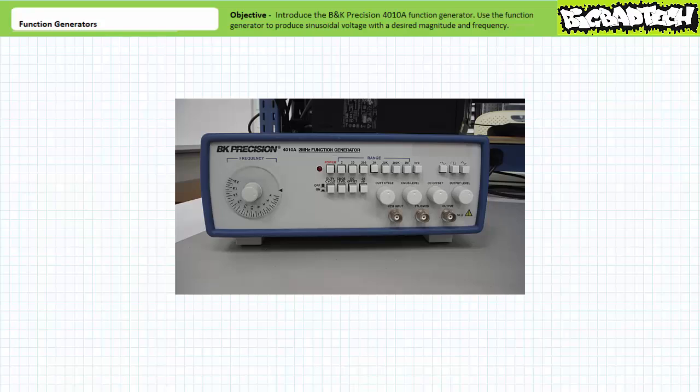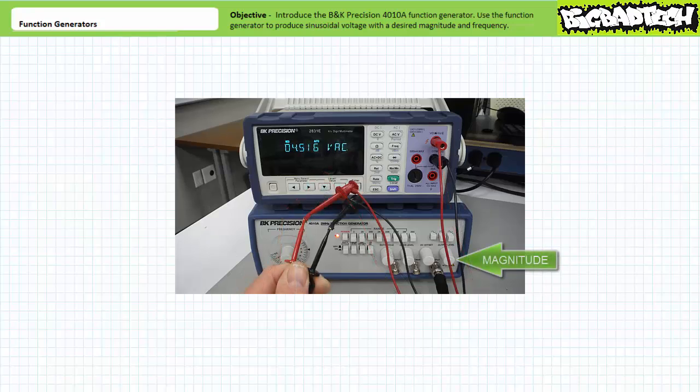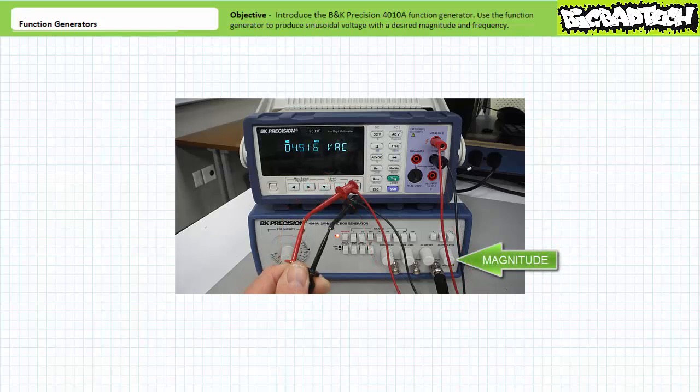Finally, one can obtain an output signal from the BK Precision 410A function generator using the output labeled output on the lower right-hand side. Let's plug in the appropriate cable and verify our output using a DMM. Pressing power on the BK Precision 410A function generator enables this output. Using a DMM in AC voltmeter mode, it looks like we're close, but ever so slightly off our desired 4.5 volts RMS output. Readjusting the output level using the fourth knob on the right, we dial it in to 4.5 volts.